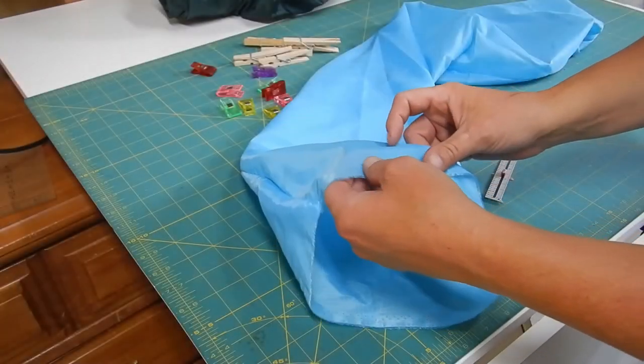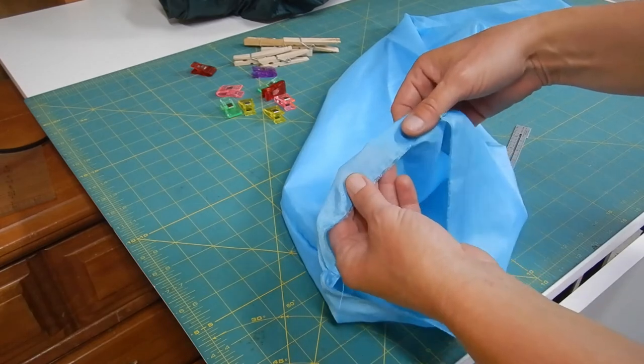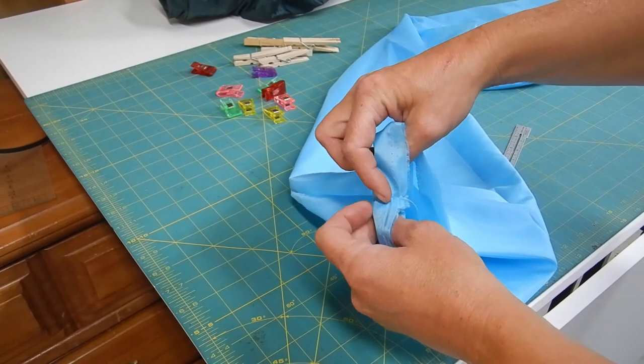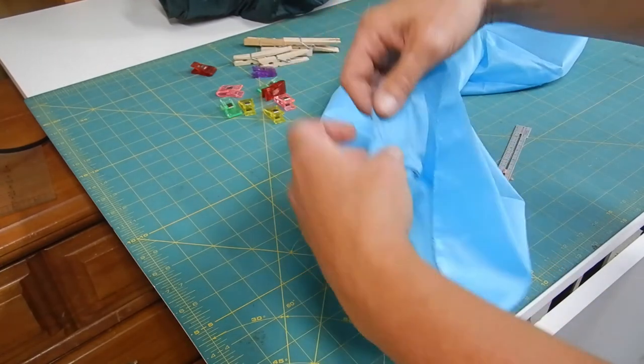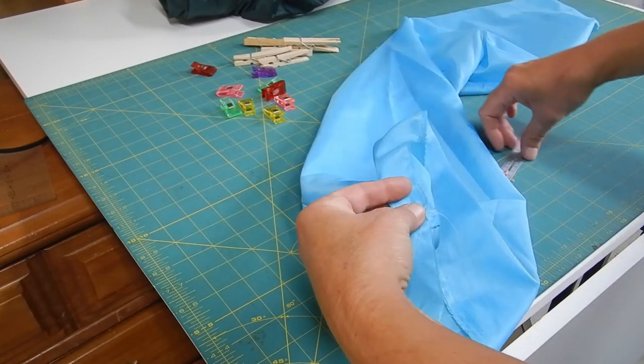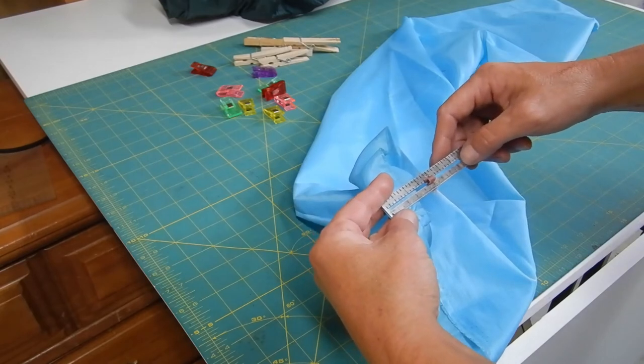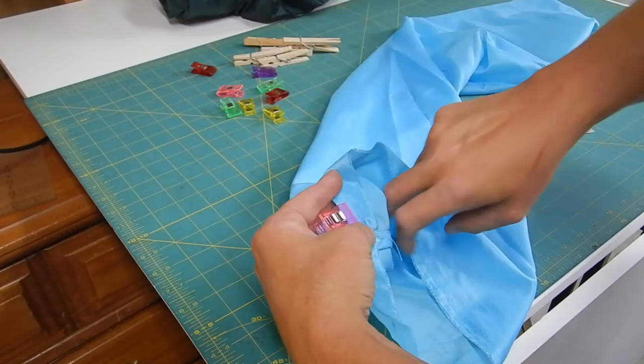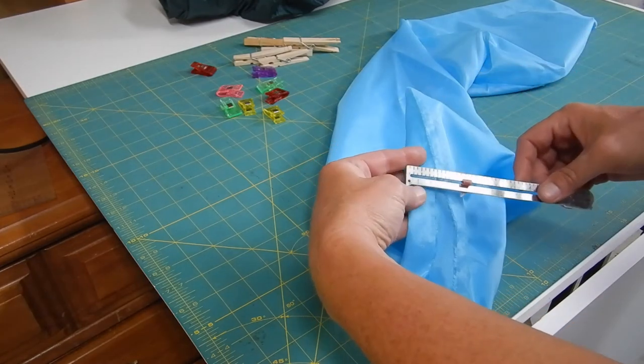So now it's time to make the casing. This has the selvedge edge on it so I don't need to finish that edge. And I'm going to just leave it open where the string will come out to do the drawstring. It's just a simple, simple way to do that. And I'm going to do about an inch casing. So I'm just going to measure and clip, and measure and clip again.